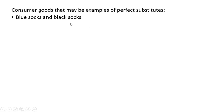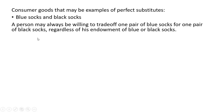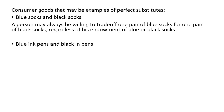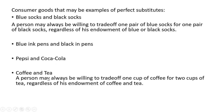The horizontal intercept is given as u divided by a. Some examples of consumer goods that may be perfect substitutes: blue socks and black socks — a person may always be willing to trade off one pair of blue socks for one pair of black socks, regardless of their endowment. Also blue ink pens and black ink pens, where a person doesn't care which color they write in. Maybe Pepsi and Coca-Cola for some consumers, or coffee and tea — where a person may always be willing to trade off one cup of coffee for two cups of tea, regardless of their endowment.